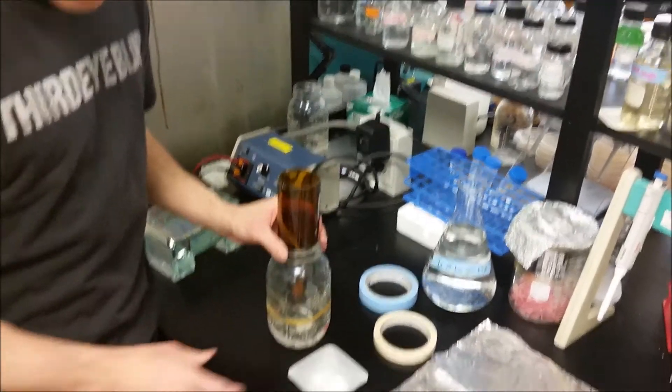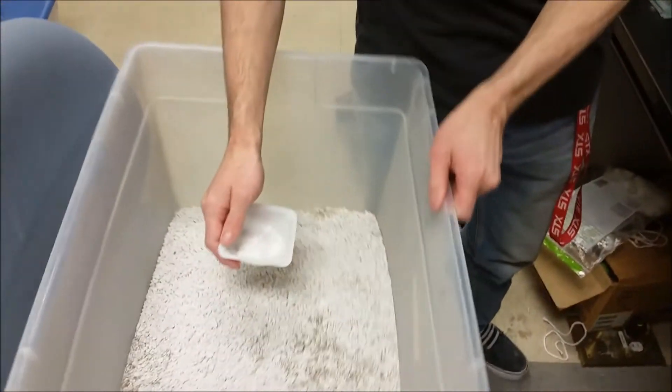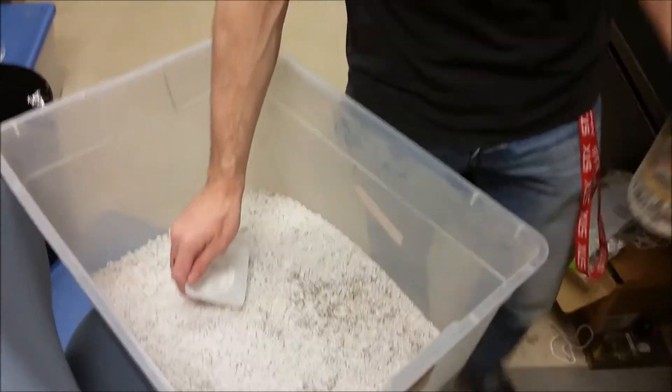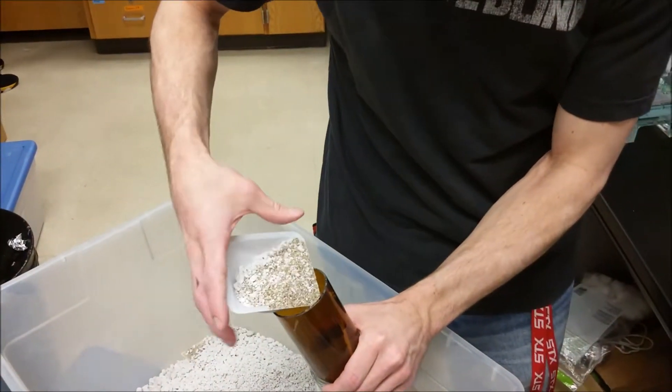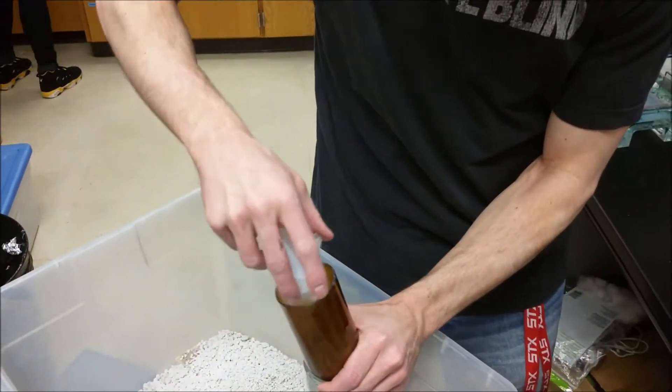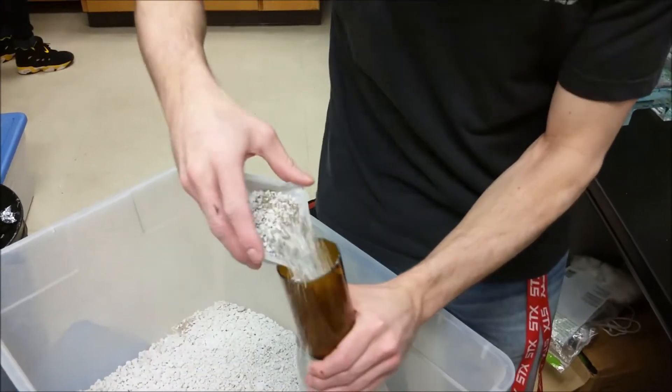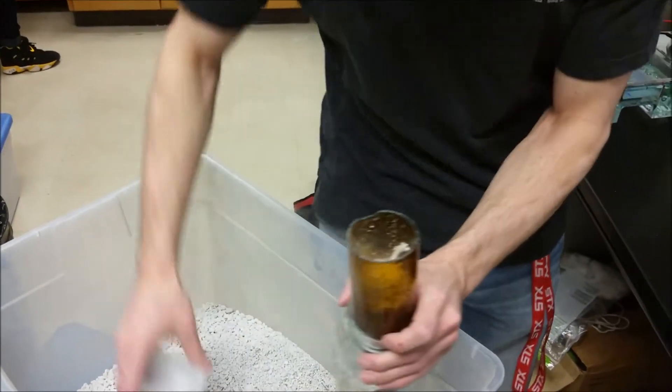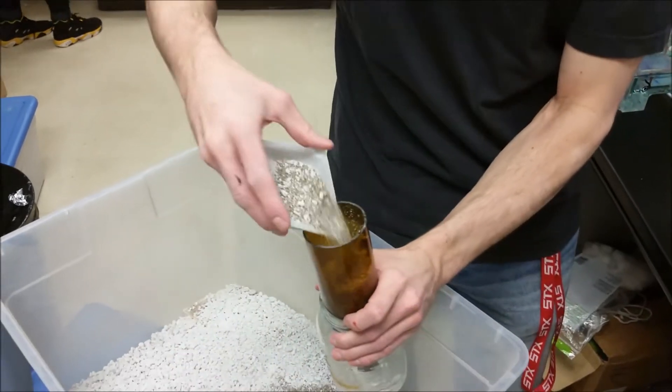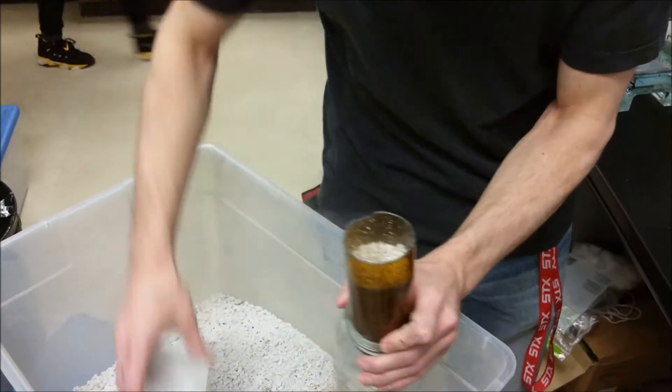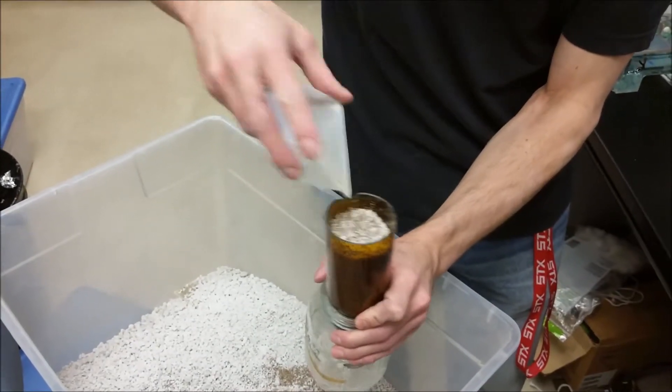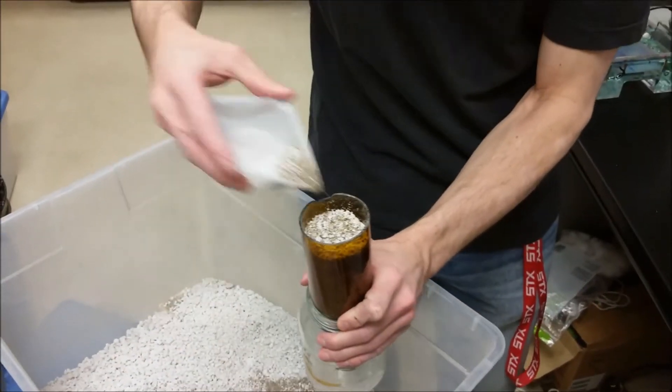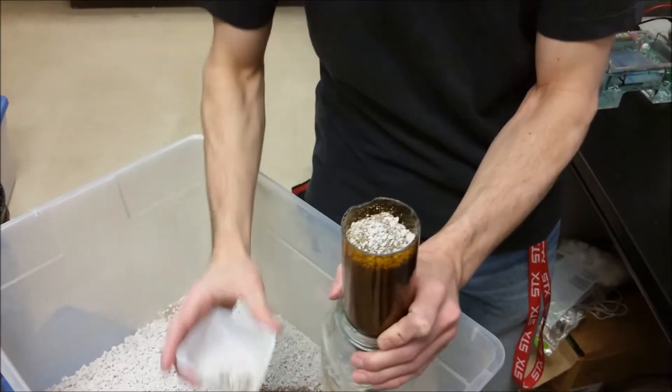The next step we're going to do is take our calcium sulfate and using this weigh boat we're going to dig out some of our artificial soil and put it into the top of our beer bottle, just like that. We want to fill this up just before the top but not all the way. Just a little bit more should be enough, right there, just a dash more. That should be fine.